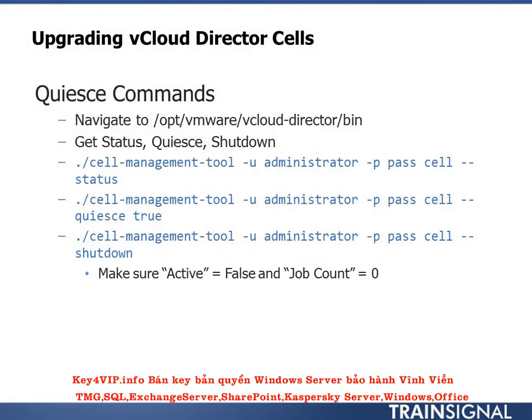You'd want to do this for all your cells. If you have multiple cells with load balancers, there are ways to stay partially online during the upgrade — VMware's website covers that process. But with only one cell, you'll take an outage from a management perspective. The VMs will still run — there's no issue there — but you can't reach vCloud Director. I prefer the heavy-handed approach: make sure no one's in there, nothing's happening, to make the upgrade as flawless as possible.